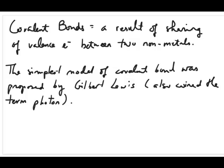So what exactly is the Lewis model? Before we can talk about it, we need to first describe what we meant by a covalent bond. A covalent bond is basically a result of sharing of valence electrons between two non-metals. That's to be differentiated from an ionic bond where you have a metal and a non-metal.